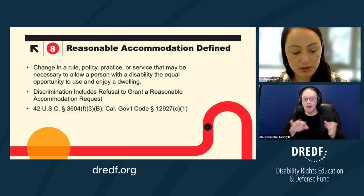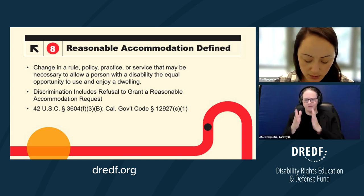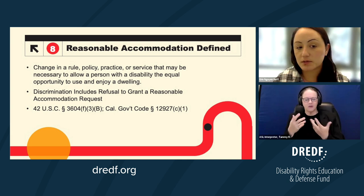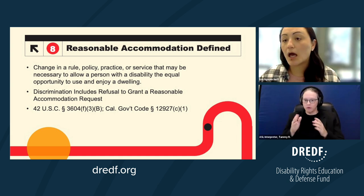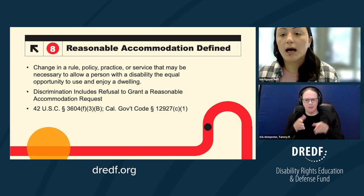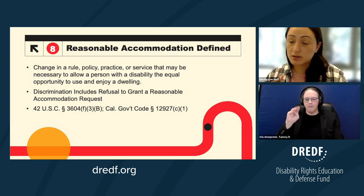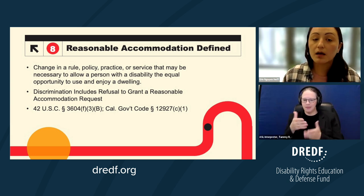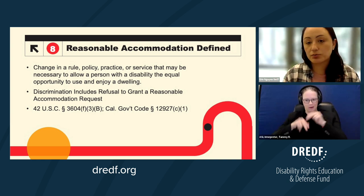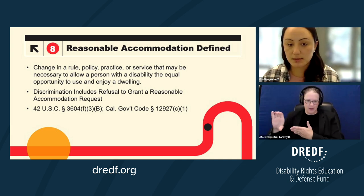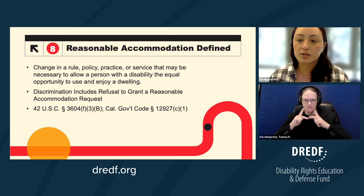Diving into reasonable accommodations. A reasonable accommodation is a change in some sort of rule, policy, or practice that allows a person with a disability to use and enjoy their apartment or home in the way it's meant to be used. There's also a reasonable modification — sometimes the two terms are used interchangeably. Under FEHA, reasonable modifications are generally physical changes the tenant usually pays for, while reasonable accommodations are generally changes to the lease, policies, or management service policies. Since we're focusing on what will prevent an eviction, we're not really going to talk about physical modifications.